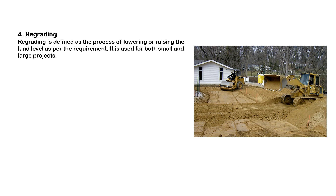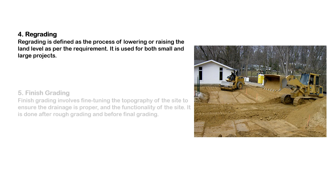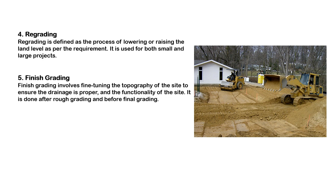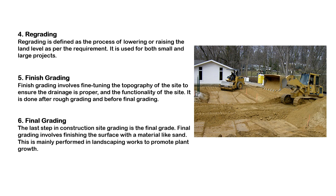The fourth type is regrading. Regrading is defined as the process of lowering or raising the land level as per the requirement. It is used for both small and large projects. The fifth type is finish grading. Finish grading involves fine-tuning the topography of the site to ensure the drainage is proper and the functionality of the site. It is done after rough grading and before final grading.